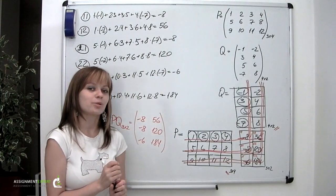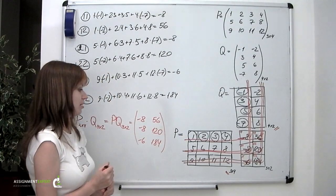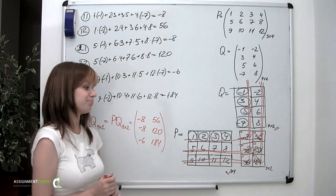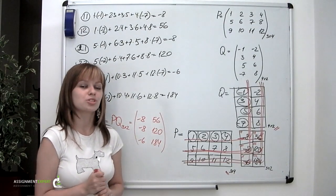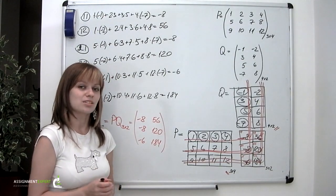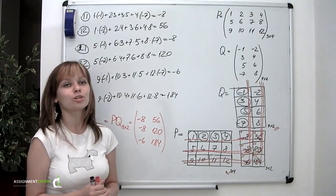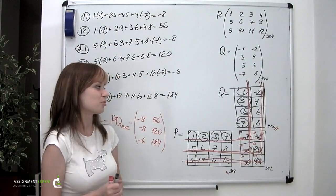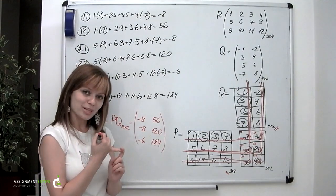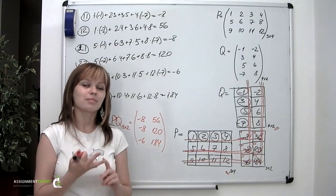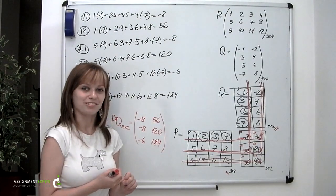Now you might ask why we haven't said anything about division of matrices — and that would be a very good question. Dividing matrices is a much more complicated procedure than multiplication and it deserves particular attention. For now, we have learned the whole concept of matrices and learned to perform basic operations with them: addition of matrices, multiplication by a number, and multiplication of matrices. So you have a lot to enjoy.